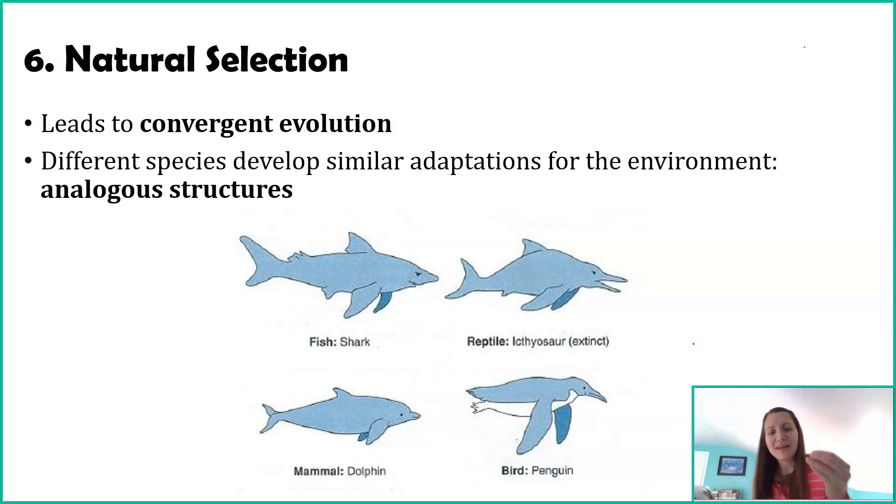There is a name for these similar structures and similar adaptations we see. It's called analogous structures. For example, the flippers of a penguin and the fins of a dolphin would be considered analogous. It's a structure that has the same function. In this case, the function is swimming through water, but the form. So the underlying skeletal structures, where these are derived from, are very different from one another.